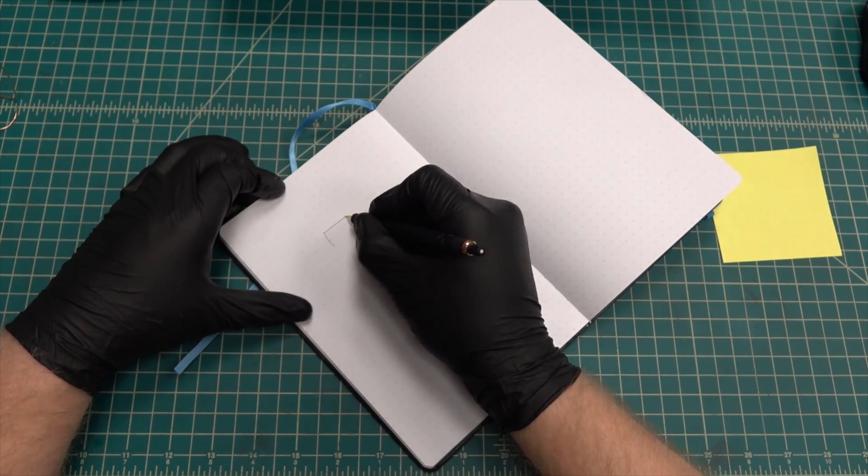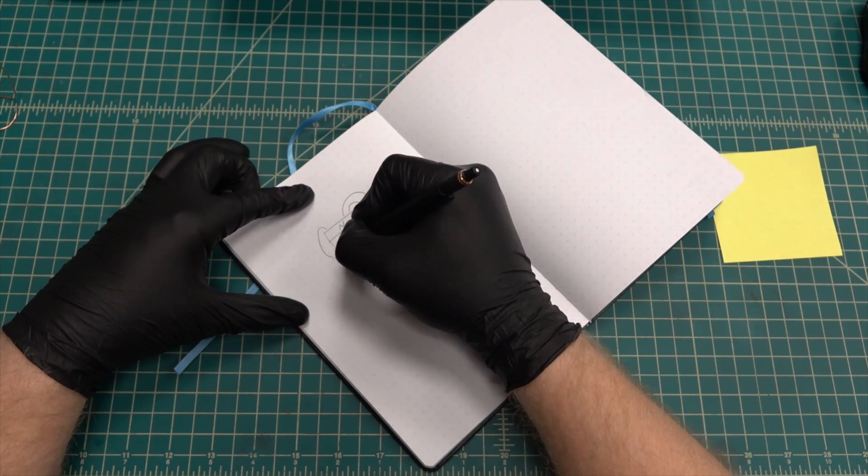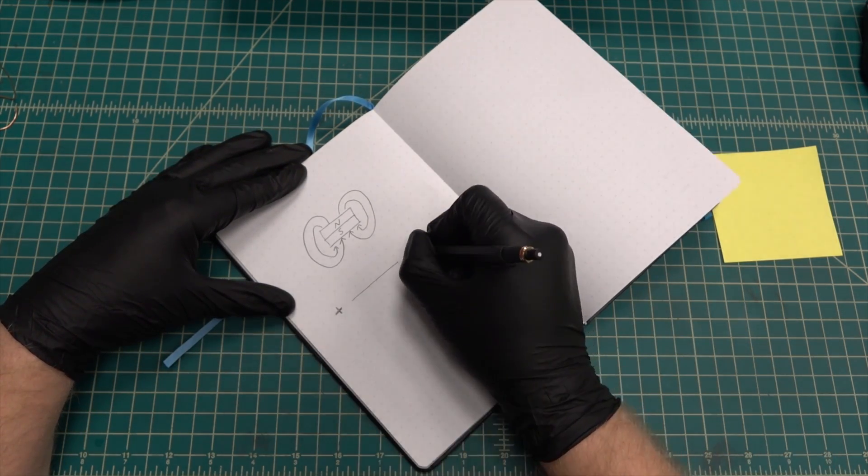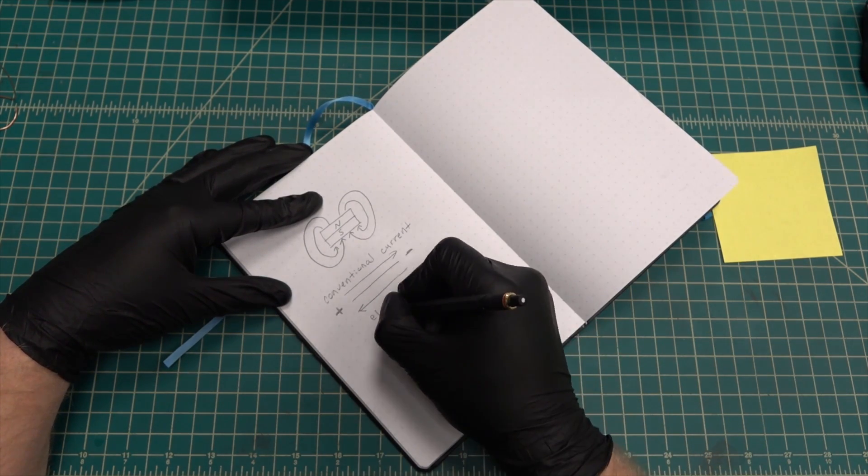Now let's take a look at what the field of a magnet looks like. The direction of the magnet's magnetic field flows from the north pole to the south pole. Remember that for the right hand rule we'll be using conventional current flow, which is from positive to negative. This is the opposite of the electron flow, which is from negative to positive.